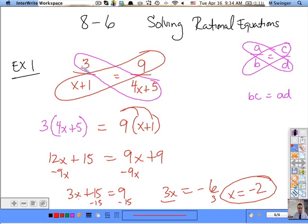There you go. Plug it in just to make sure. 3 over negative 2 plus 1 is negative 1. Should equal 9 over. This is 4 times negative 2 plus 5. So that's negative 8 plus 5. Which is negative 3. So that's negative 3. And this is negative 3. Check.